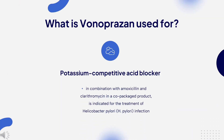What is Bonoprazin used for? Bonoprazin in combination with amoxicillin and clarithromycin in a co-packaged product is indicated for the treatment of Helicobacter pylori (H. pylori) infection in adults. Another co-packaged product with only Bonoprazin and amoxicillin is also indicated for the treatment of H. pylori infection in adults.